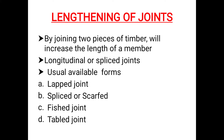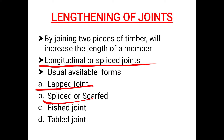For lengthening joints, we use spliced joints, also known as longitudinal joints. These are available in different forms: lapped joint, spliced, scarfed, fished joint, and tabled joint. This is the classification of lengthening joints in these four available forms.